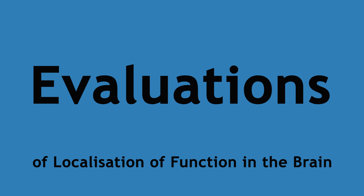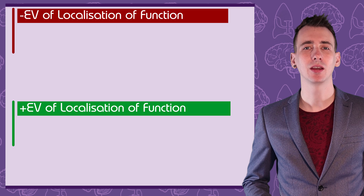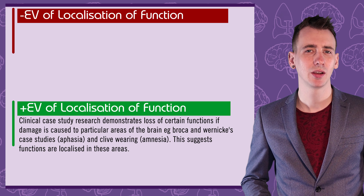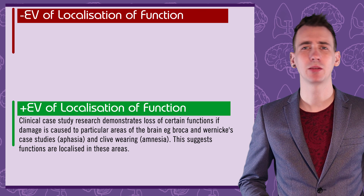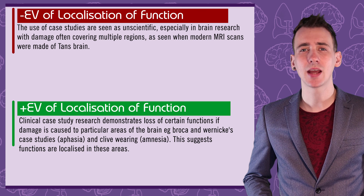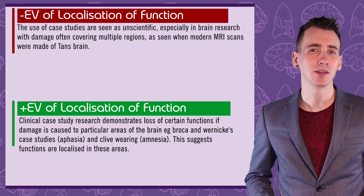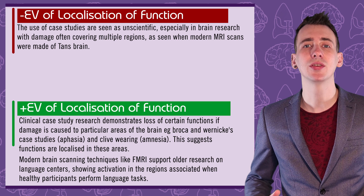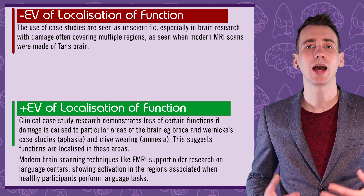Evaluation of localisation of function. Human clinical case study research by Broca and Wernicke, as well as case studies like Clive Wearing, demonstrate the loss of functional abilities like speech and memory. As brain damage is in particular locations, it suggests that those locations are responsible for those functions. However, a recent MRI scan of Tan's brain showed damage far beyond Broca's area, suggesting other areas could be responsible for his speech problems. Despite this, Broca's and Wernicke's areas' roles in language processing and their location in the left hemisphere have been backed up by modern scientific research using fMRI, studying healthy brains while completing language processing tasks.